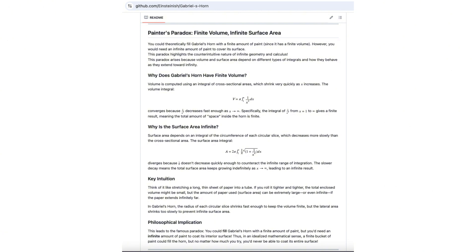However, the surface area, which depends on the circumference of these slices, does not shrink fast enough to prevent it from becoming infinite. Once we accept that different types of infinities behave differently, the paradox disappears.